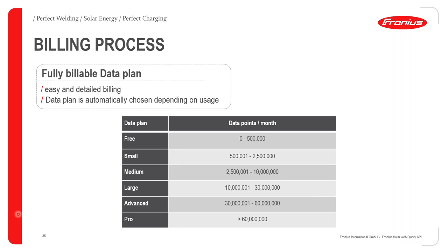As an example: to query one hour of historical data for energy exported to the grid, note that SolarWeb receives new data from the inverter every five minutes. Dividing one hour by five minutes gives 12 data points. Querying current on Phase 1 for one hour generates 12 data points. The same applies for energy forecasting, weather data, and service messages — each service message generated on the inverter counts as one data point.